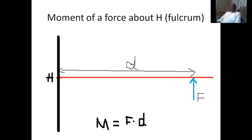We are going to apply the basic equation here. Imagine we have a pole and we have tied a rod at point H where there is a hinge. We apply a force upwards, which is force F, so that this rod does not drop. From this point up to where the force is, this is the distance given by D. And this force is at 90 degrees to the distance. Therefore, to calculate the moment of the force, we will multiply the force by the distance.